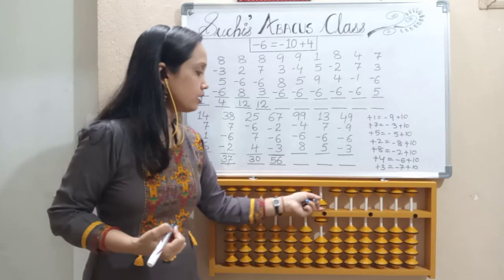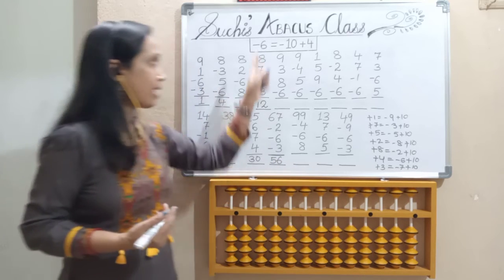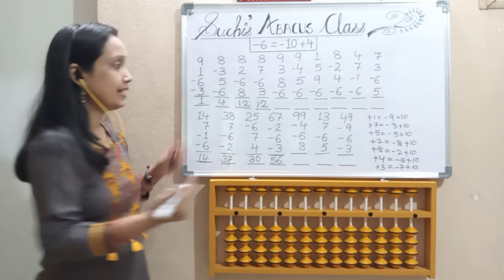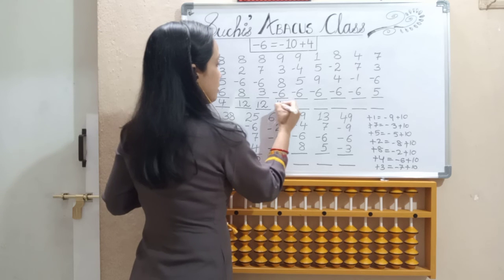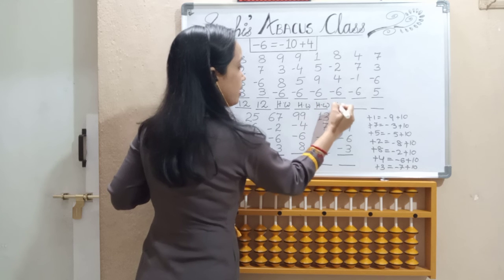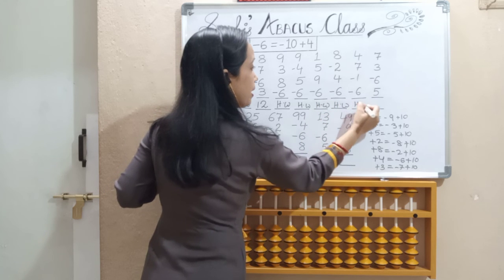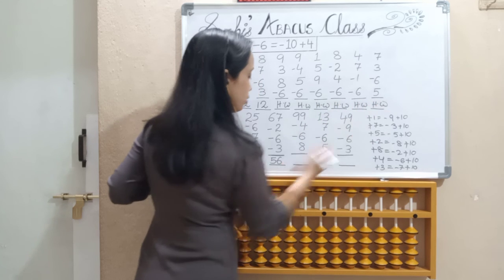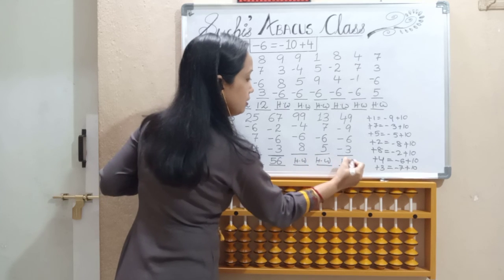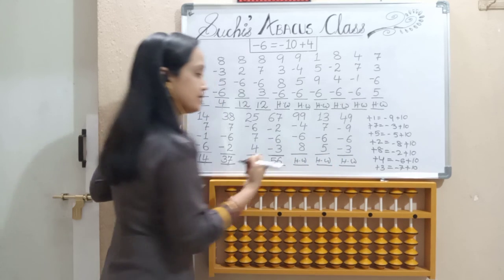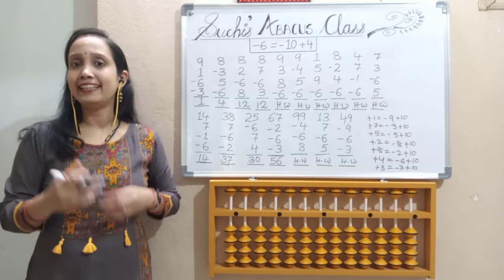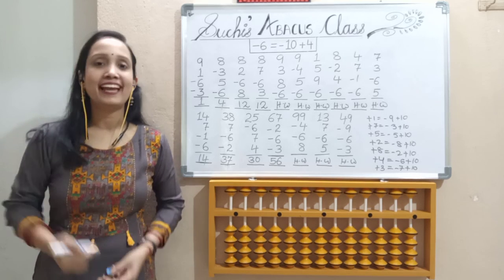So children, hope you all understood today's practice — that is for less 6. Remaining sums I am leaving for you, so that you can write them in your book and practice. You can post your answer in the comment box so that I can know that my children are practicing. If you like my video, don't forget to like it. Till that time, practice a lot. Thank you.